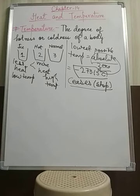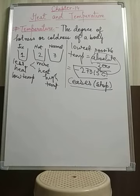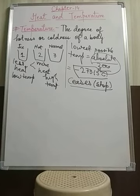Some important temperature facts: the temperature of the sun at its surface is 6,000 degrees Celsius, whereas the temperature of the core of the sun is around 15 crore degrees Celsius. Another important point is that the temperature of the coldest place on Earth is in Antarctica, which is minus 89.2 degrees Celsius.